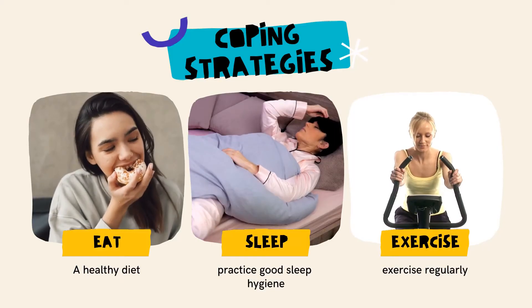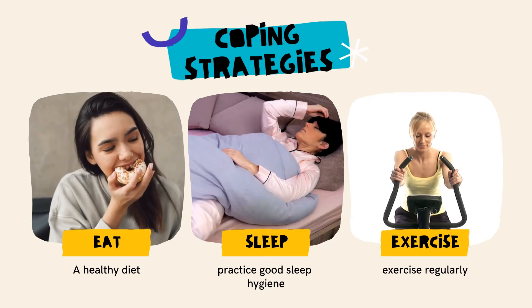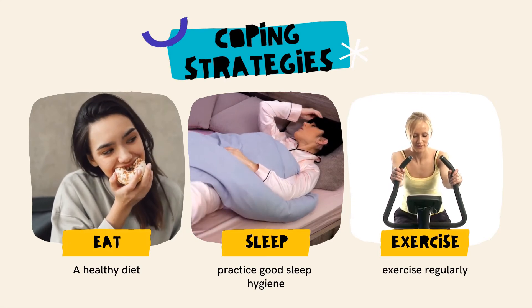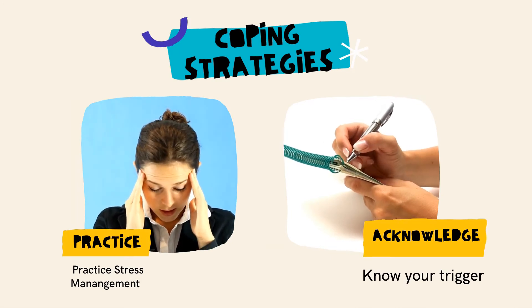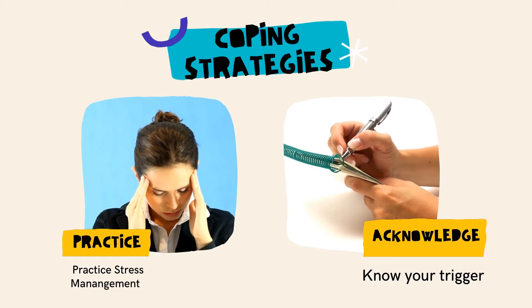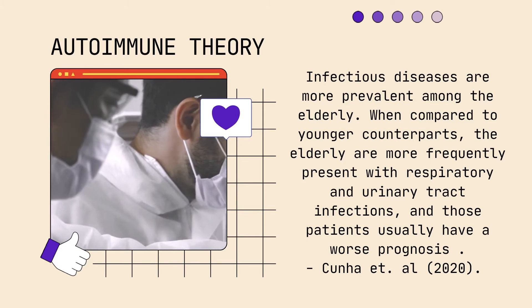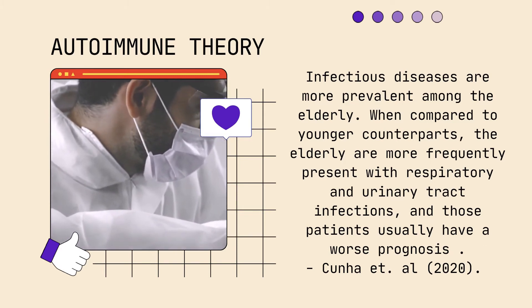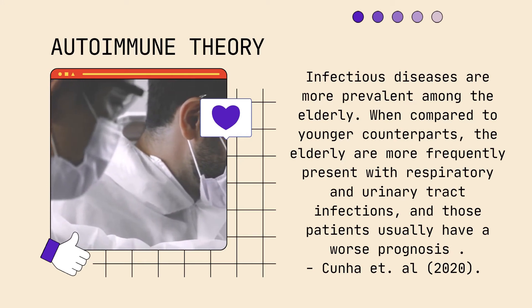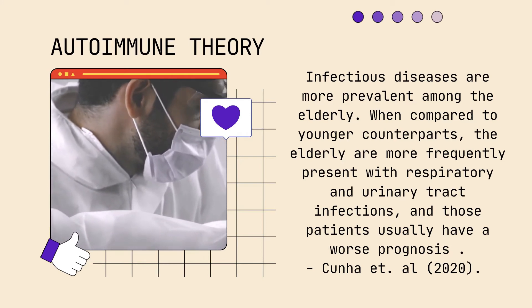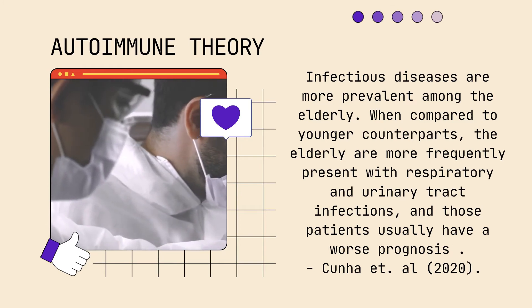To slow down or cope with autoimmune disease, one must have good sleep hygiene, eat a healthy diet, exercise regularly, practice managing stress as it can lead to inflammation, and acknowledge what your disease is and what triggers it. To conclude the autoimmune theory, infectious diseases are more prevalent among the elderly. Compared to younger counterparts, the elderly more frequently present with respiratory and urinary tract infections, and those patients usually have a worse prognosis, according to research by Chun Ha et al. (2020).